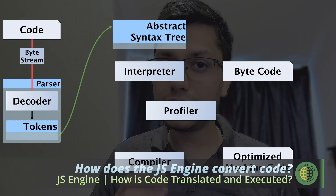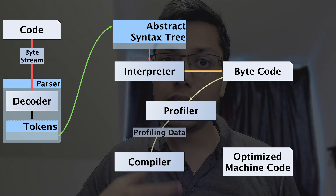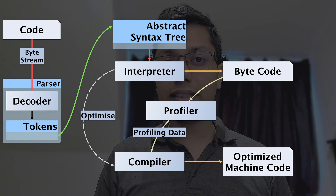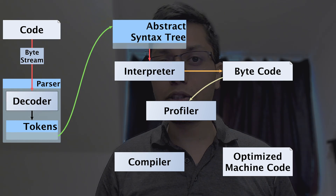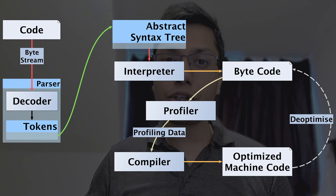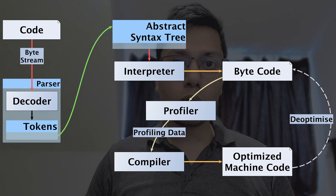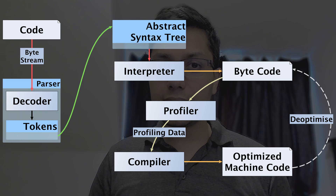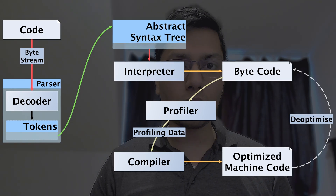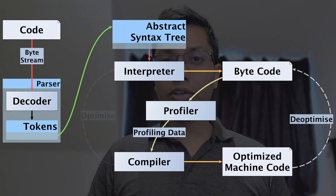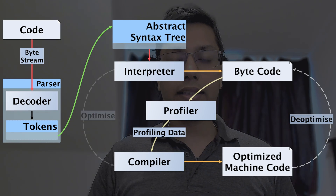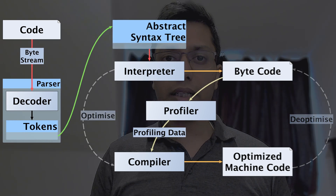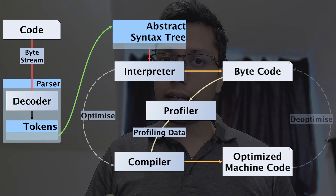So how does the JS engine utilize these six components to convert our JS code into optimized executable machine code? The JavaScript engine parses the source code and converts it into an abstract syntax tree. This AST is used by the interpreter to generate bytecode, which the interpreter then executes. To improve performance, the bytecode is passed to the optimizing compiler along with profiling data generated by the profiler. The optimizing compiler uses this data to make assumptions about our code and generate highly optimized machine code. However, if any assumptions are incorrect, it will revert back to the interpreter in a process called de-optimization. Different engines use different architectures, but at a higher level they use more or less the same components.